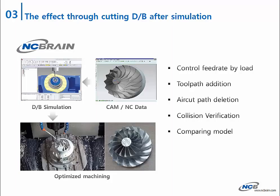NCBrain will regenerate the NC data by CAM and create the best optimized NC data after one simple simulation. After this process, feed rate control by load, toolpath addition on overload area, air cut delete, and verification of collision and overcut will be realized automatically.